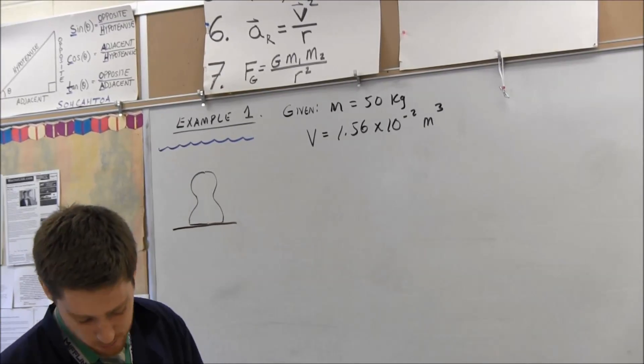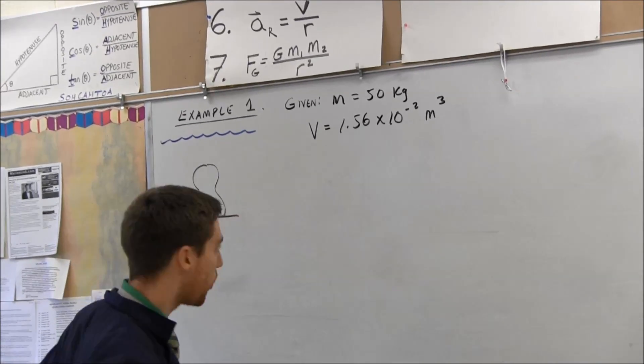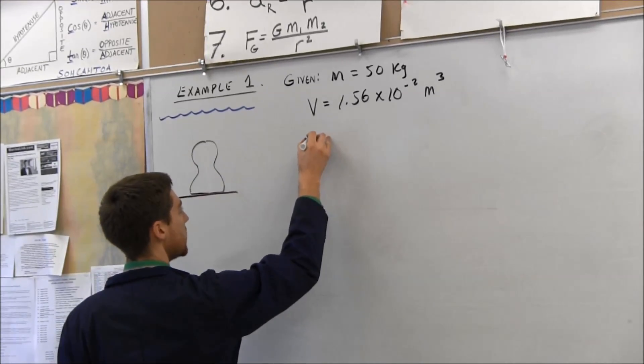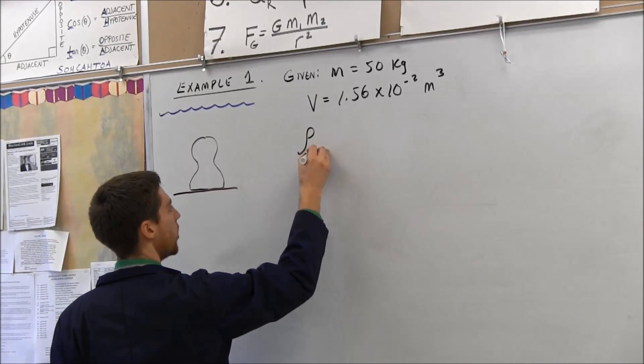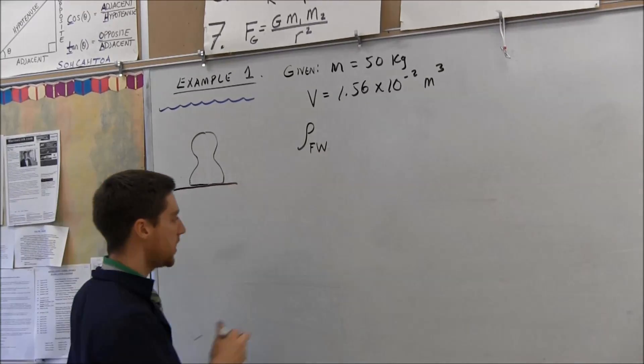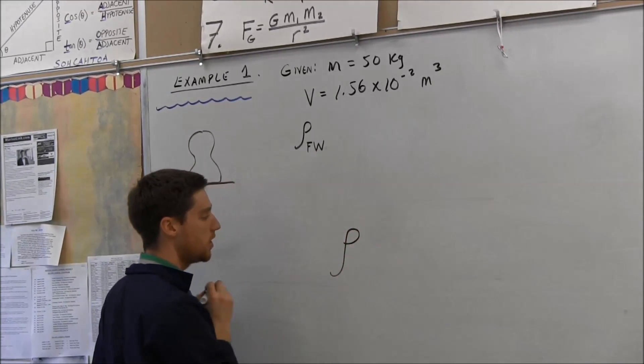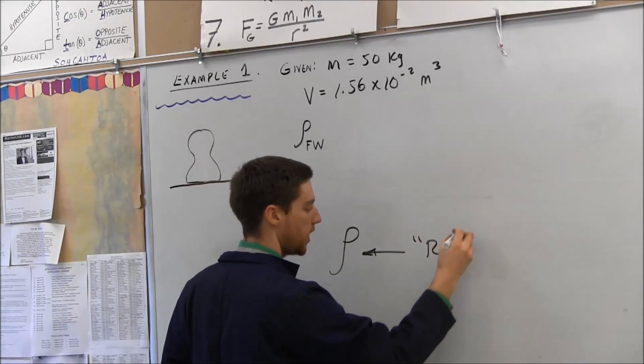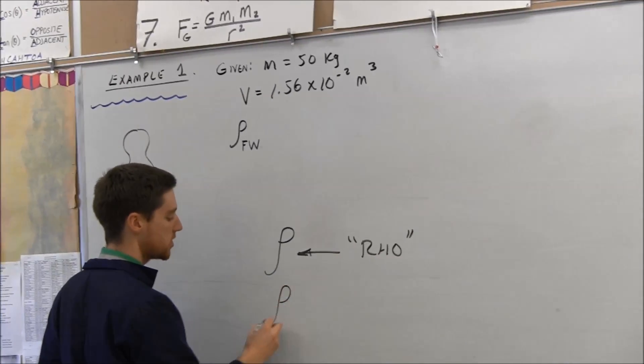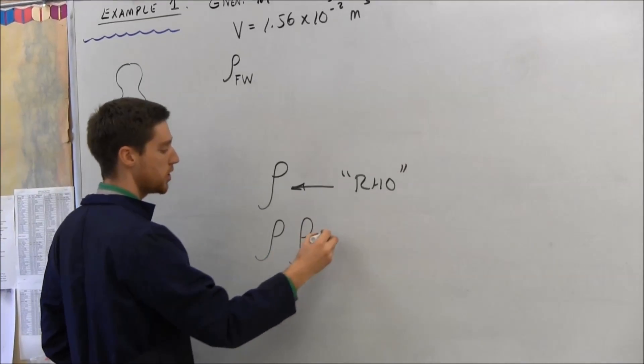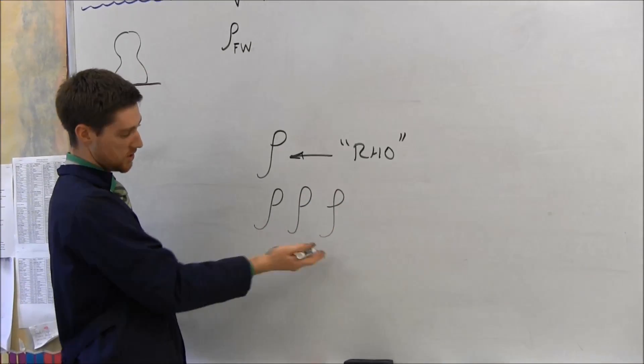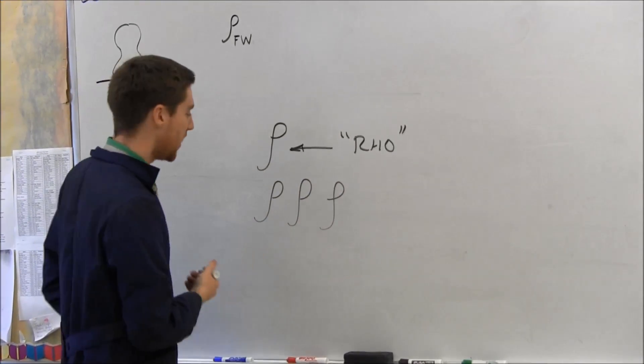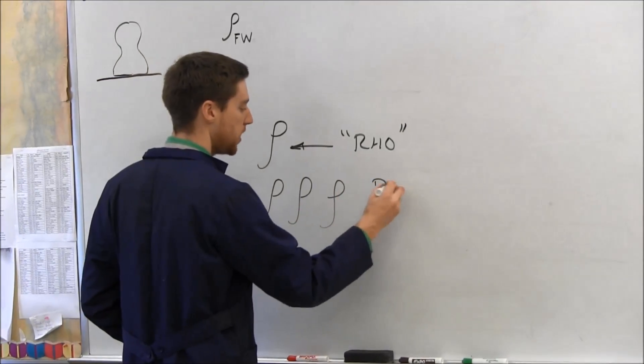Those units, meters cubed, really indicate you're dealing with volume, anything dealing with space. So we've got 1.56 times 10 to the negative 2 meters cubed. And it says we've got it's submerged in fresh water, and the density of fresh water, I'll do rho subscript FW. This is a new symbol that you've seen, a Greek letter. They pronounce it rho.